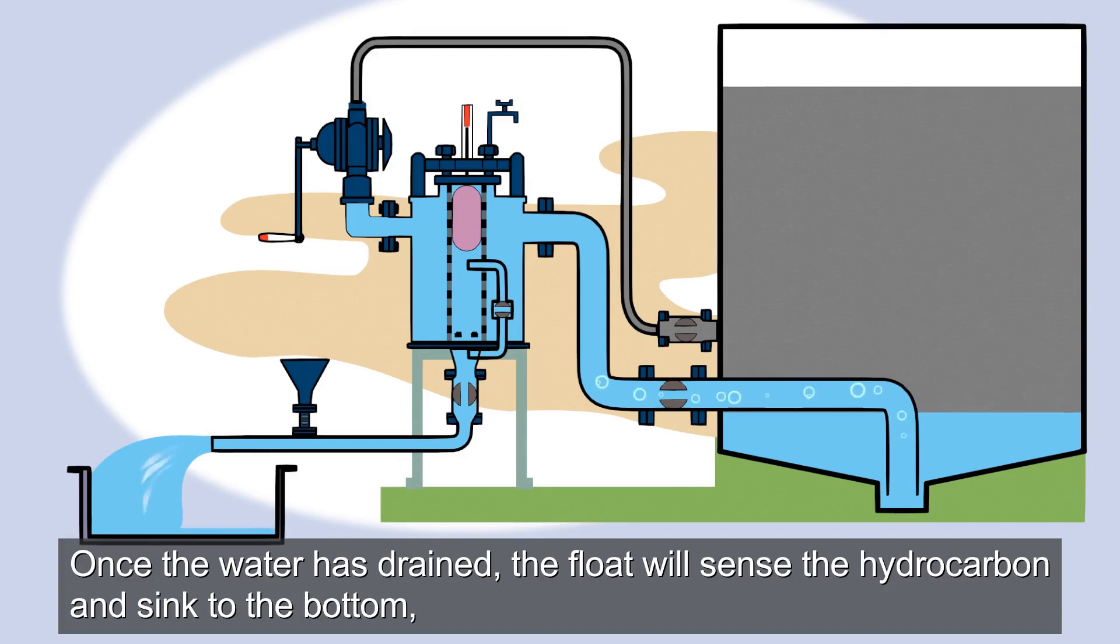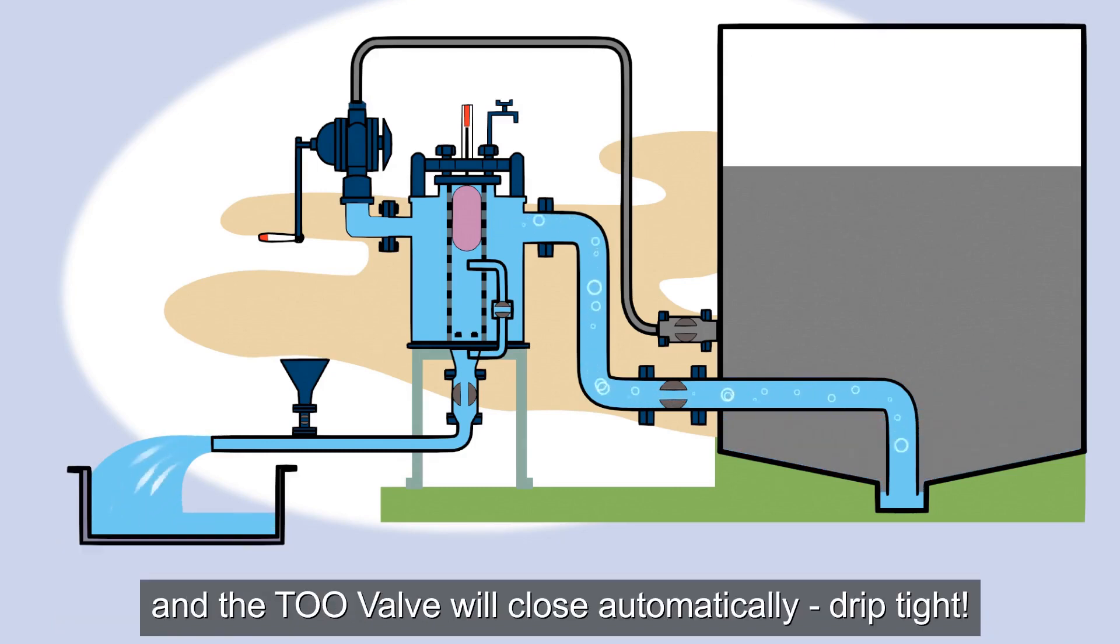Once the water has drained, the float will sense the hydrocarbon and sink to the bottom, and the TOO valve will close automatically. Drip tight.